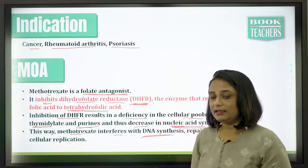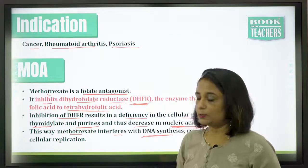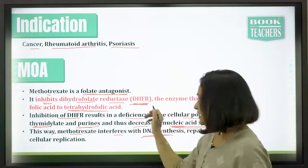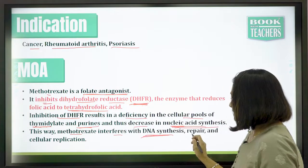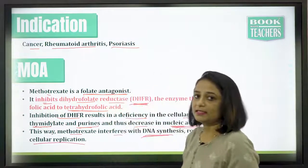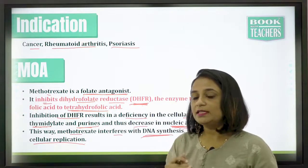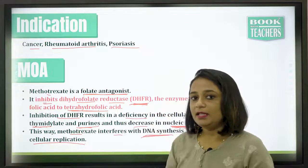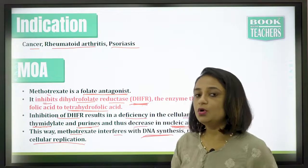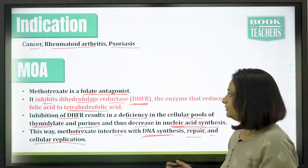This is very important in cancer, because in cancer there is multiplication of cells at a very vigorous pace. Methotrexate interferes via the folate antagonist mechanism through DHFR and stops the DNA synthesis, repair, and cellular replication of the cancerous cell. This is the way methotrexate acts — by stopping cellular growth through ultimately inhibiting folic acid synthesis, which is needed for cell replication and DNA synthesis.